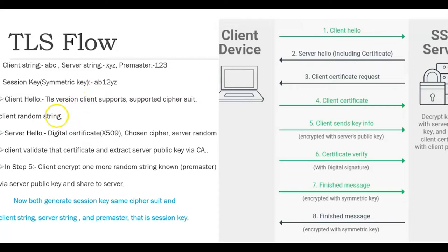The server then selects the latest supported TLS version. For example, if the client sent TLS 1.1 and 1.2, the server will choose TLS 1.2 — the best one it also supports. From the cipher suites, it selects the strongest one supported by the server. When the server sends its Hello reply in step 2, it sends the selected cipher suite, the server random string XYZ, and the digital certificate — that PKI certificate — so the server's public key goes from server to client.